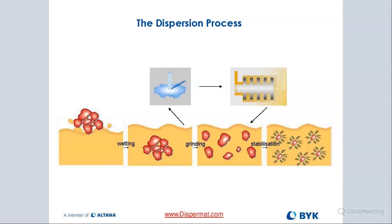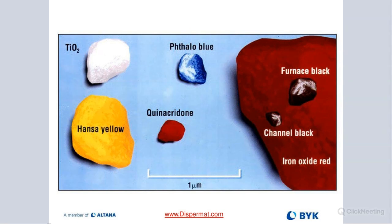This slide shows you the process — how it all works. In the beginning we use a dissolver for wetting and de-agglomeration of larger particles. Once we reach the aggregate level, roughly between 10 to 30 microns for most products, that's when we start milling. That's when we start to use media and break down particles to primary particle size. At the end, we need to use the right additives to keep these products suspended so they don't flocculate back together.